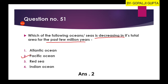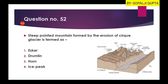If you want to know about the oceanic cycle, you can click on the eyeball icon where you will see the different cycles of ocean formation and ocean declination — that is known as the Wilson cycle. Question 52: 'Steep pointed mountain formed by the erosion of cirque glaciers is termed as?'